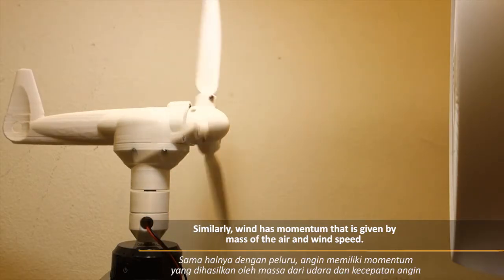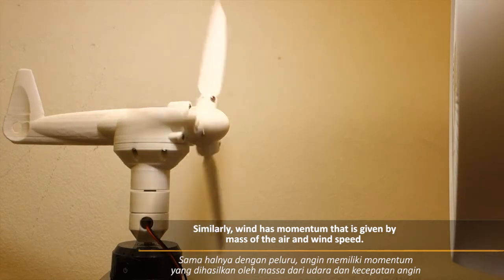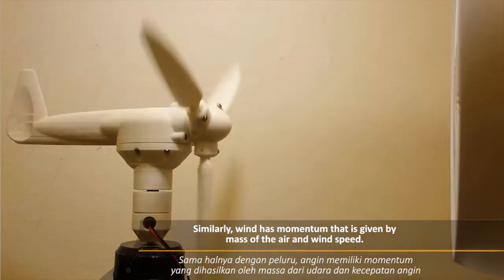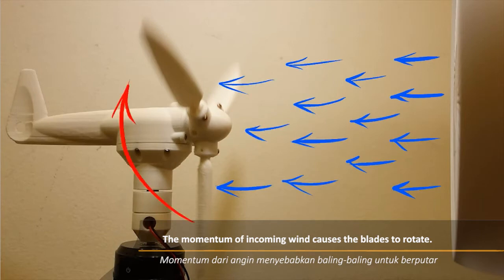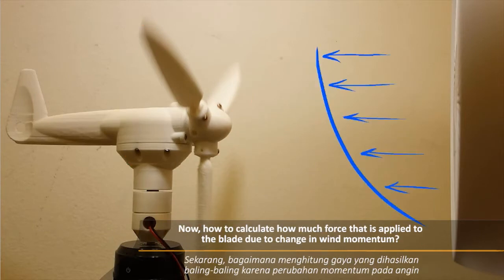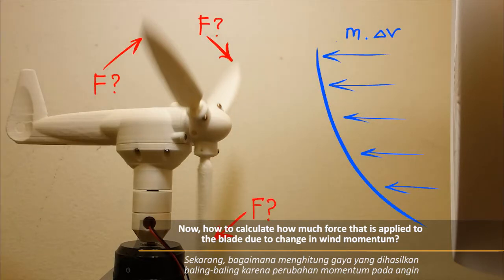Similarly, wind has momentum that is given by mass of the air and wind speed. The momentum of incoming wind causes the blade to rotate. Now, how to calculate how much force is applied to the blade due to the change in wind momentum?